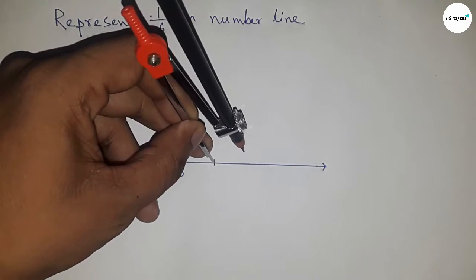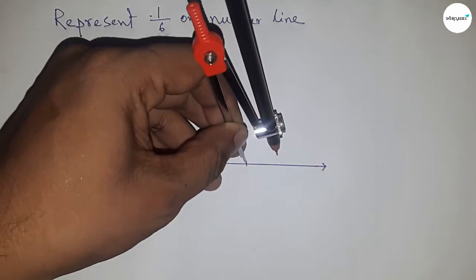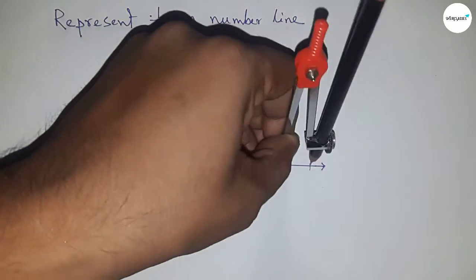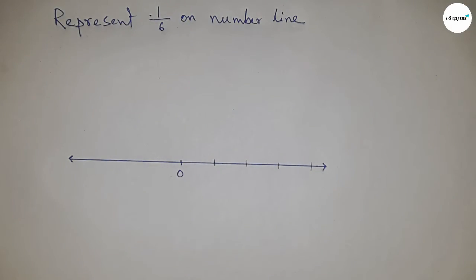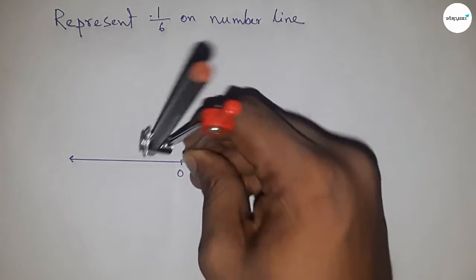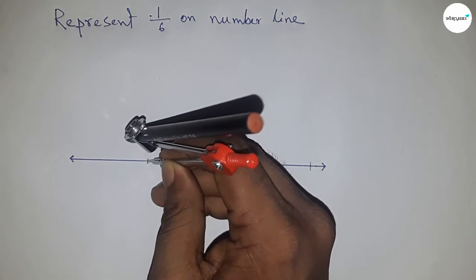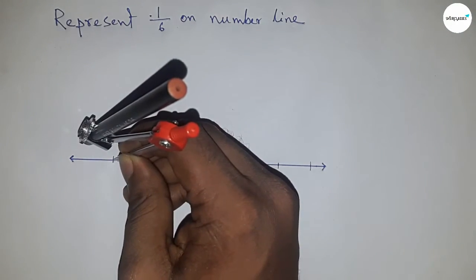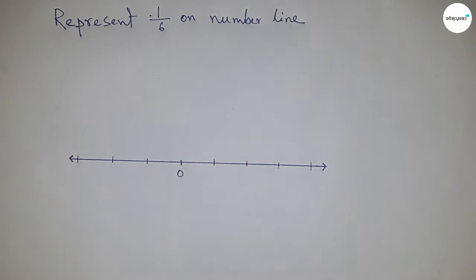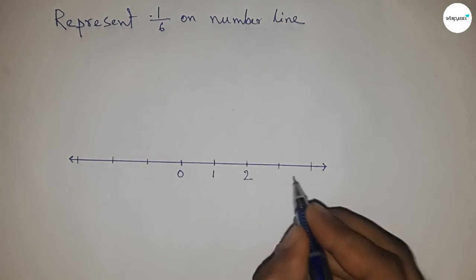Next have to mark the numbers on the line, so taking any length by compass and marking the numbers on the line by this way, and all lengths are equal. And this type of length is called unit length - that means one unit length.